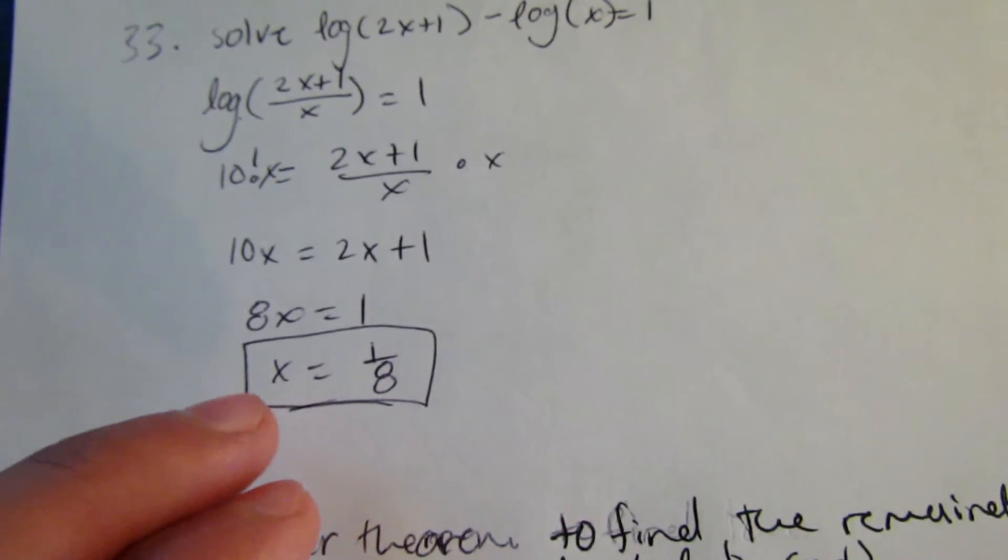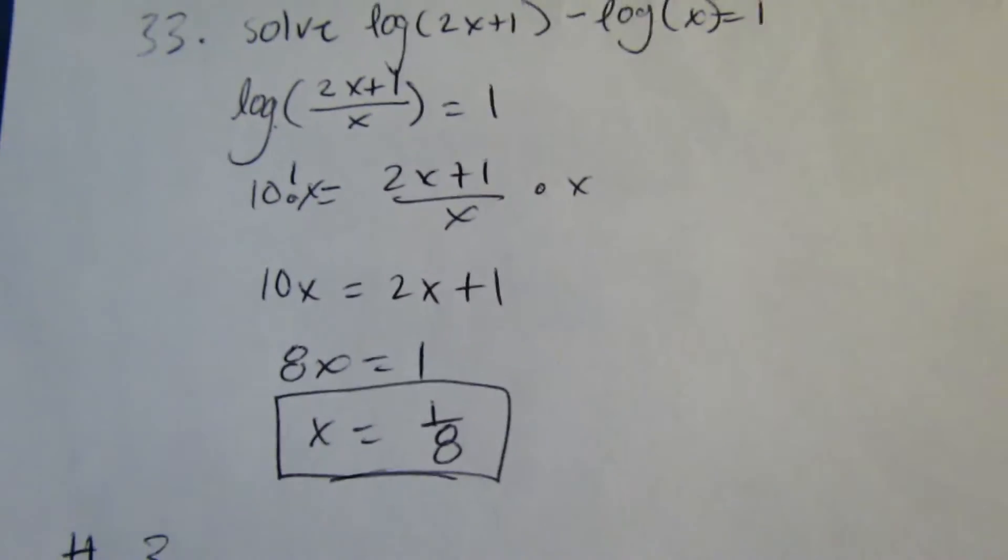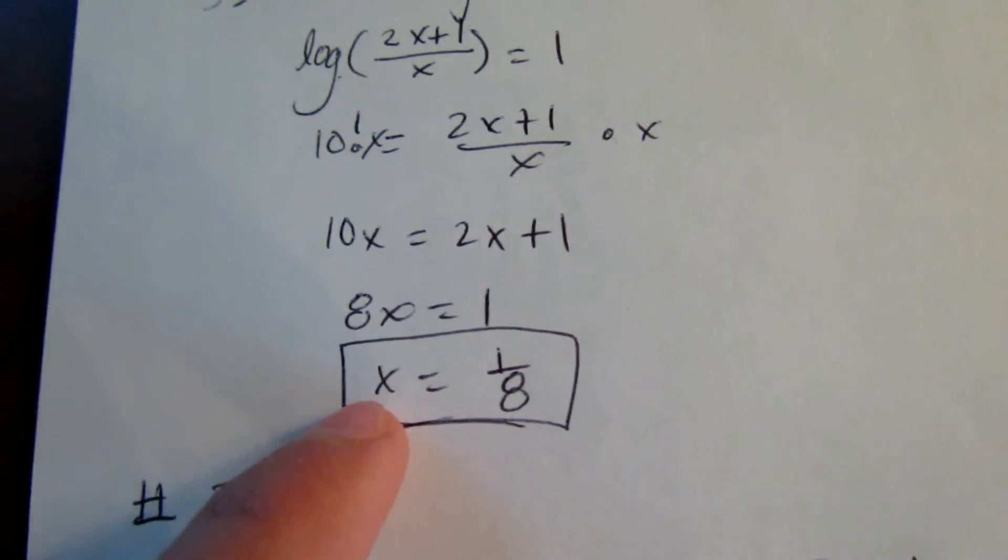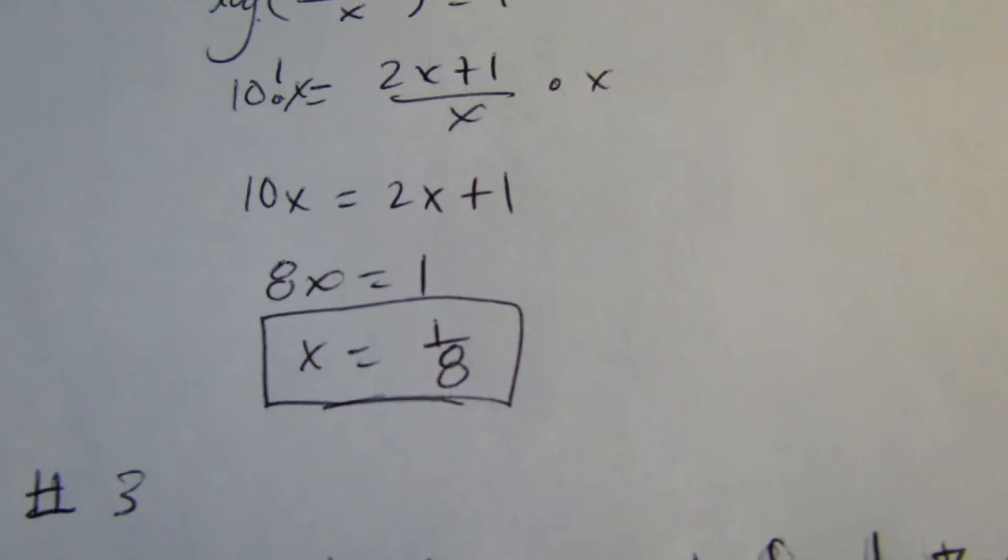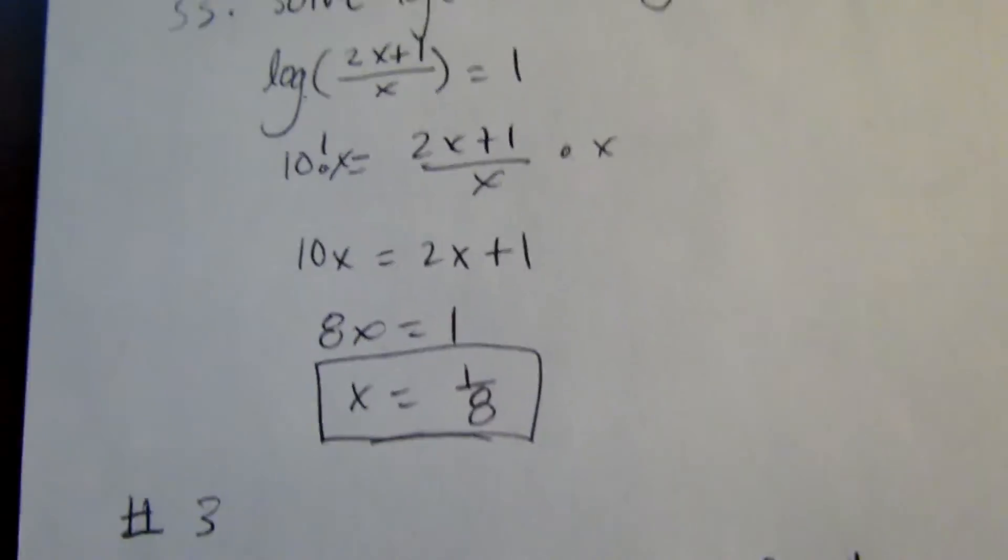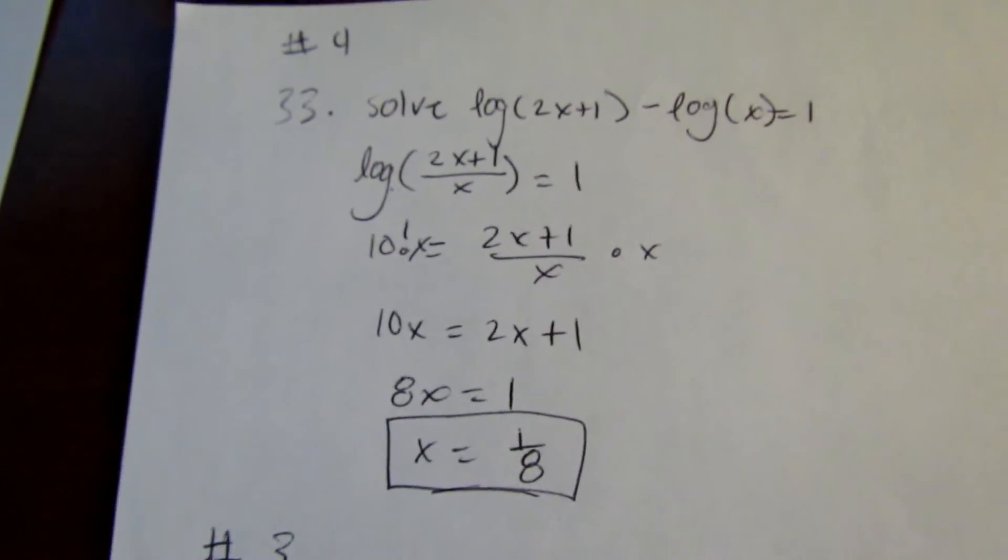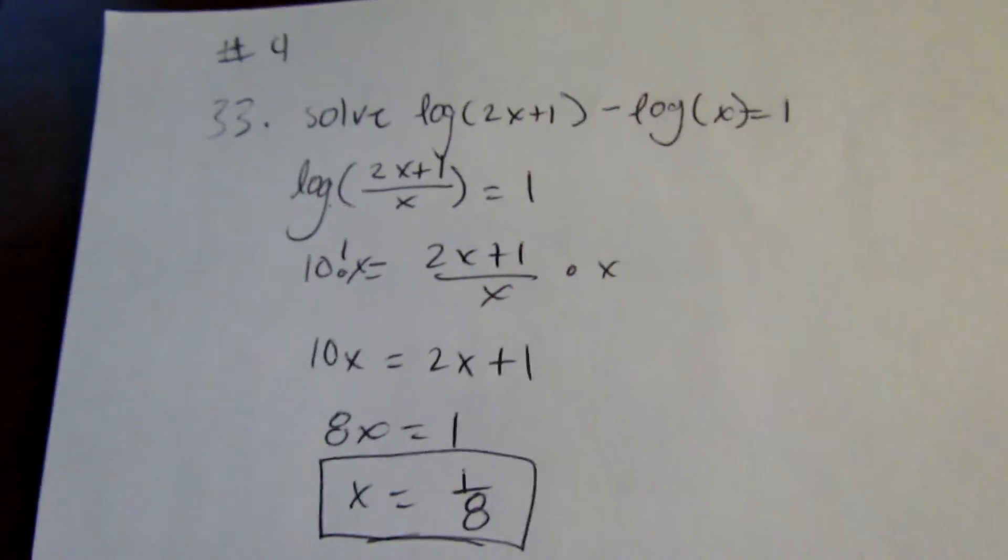Minus the 2x to get x by itself, and then divide by 8, and x equals 1/8. And that's how you solve for log of 2x plus 1 minus log of x equals 1.